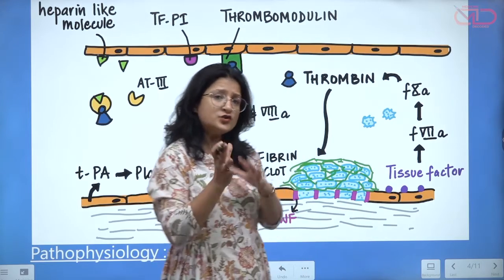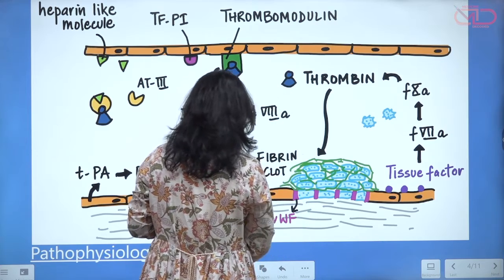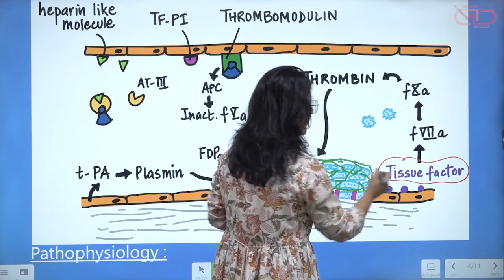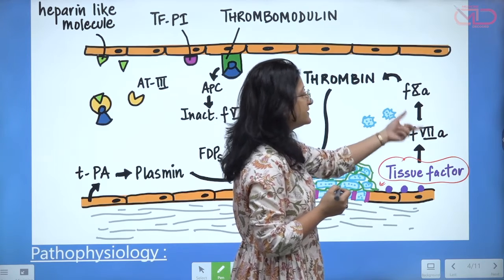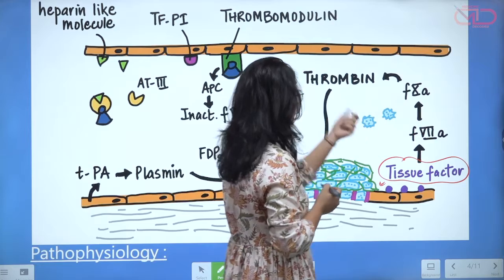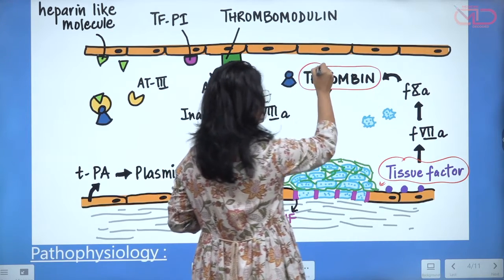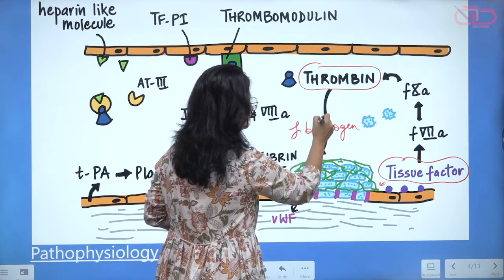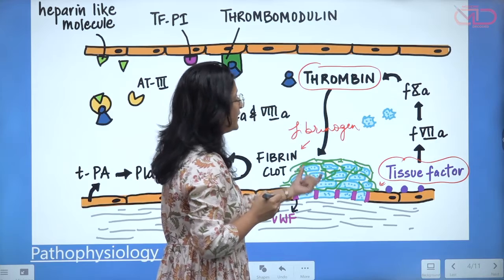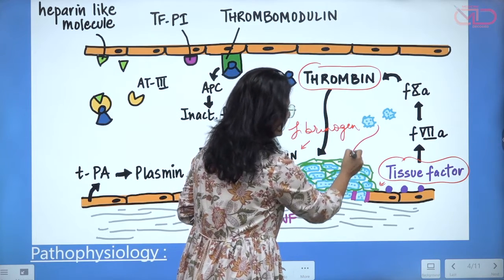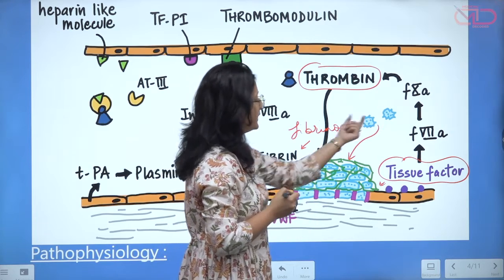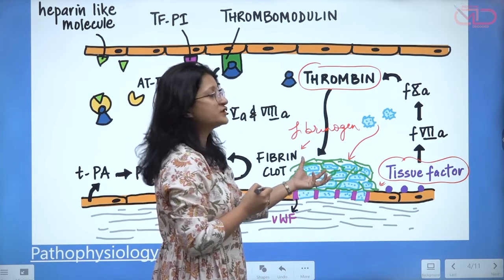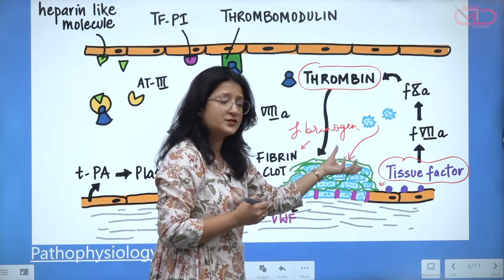In vivo, clotting or thrombosis happens by the extrinsic pathway, which is initiated by the release of tissue factor on the surface of endothelial cells. This leads to further activation of the coagulation cascade — Factor 7, Factor 10 — ultimately leading to thrombin, which converts fibrinogen to a fibrin clot. Thrombin also leads to more platelet recruitment into the area of endothelial damage; these activated platelets take part in thrombus formation, and clotting factors are consumed in the process.